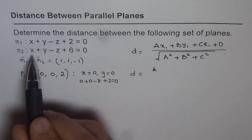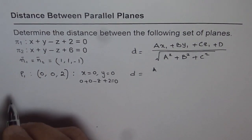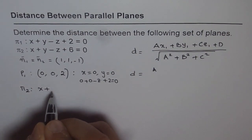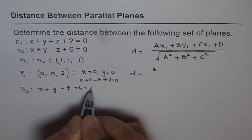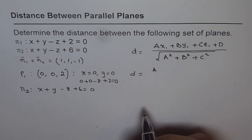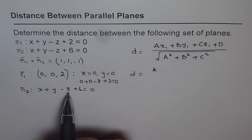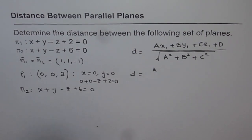A is 1 in this case. We are substituting these values for the second plane. We are trying to find distance of point P1 with plane pi 2, which is x plus y minus z plus 6 equals to 0. So x, y minus z will be substituted by 0, 0, and 2, and then we have 6 here.